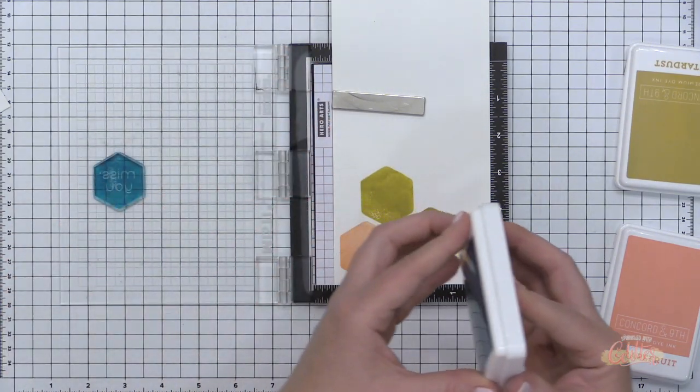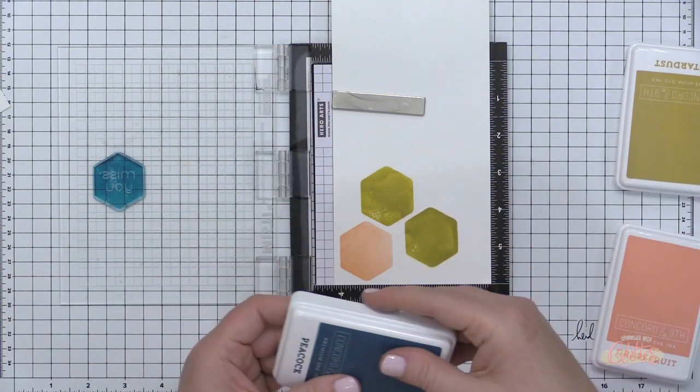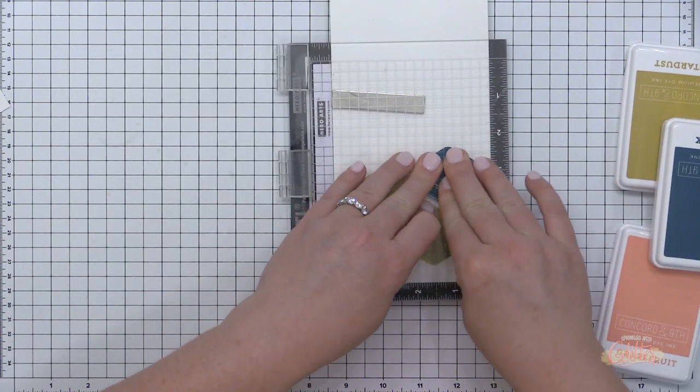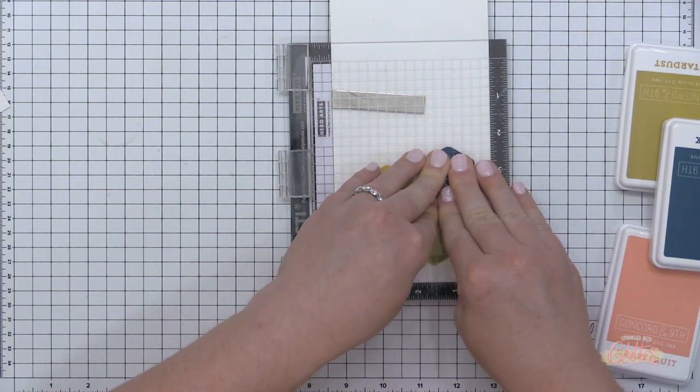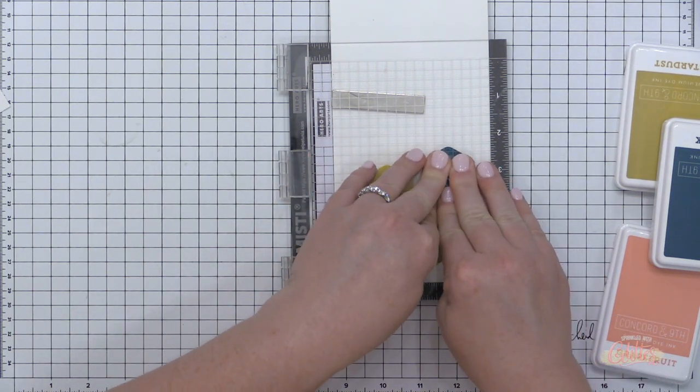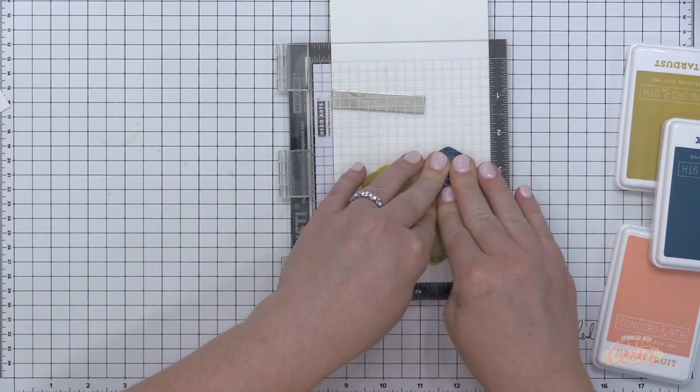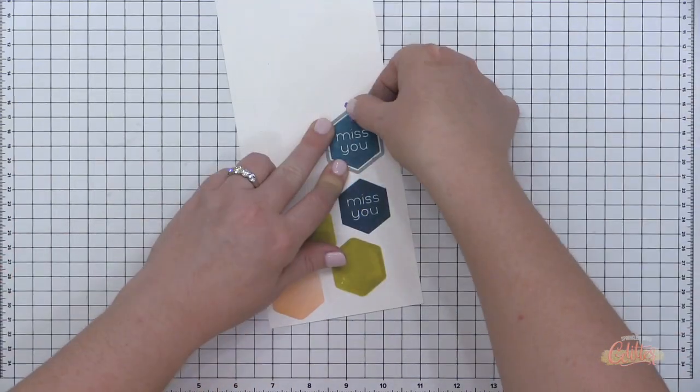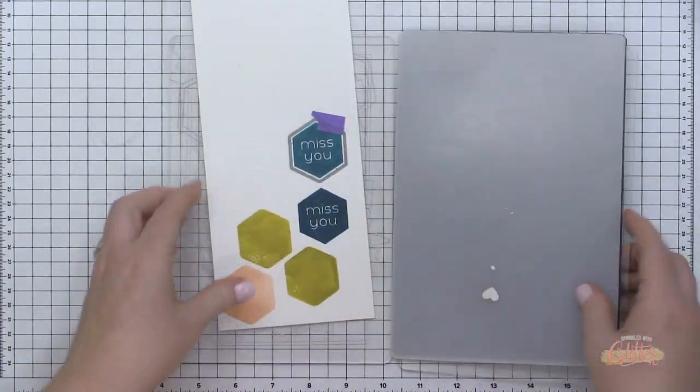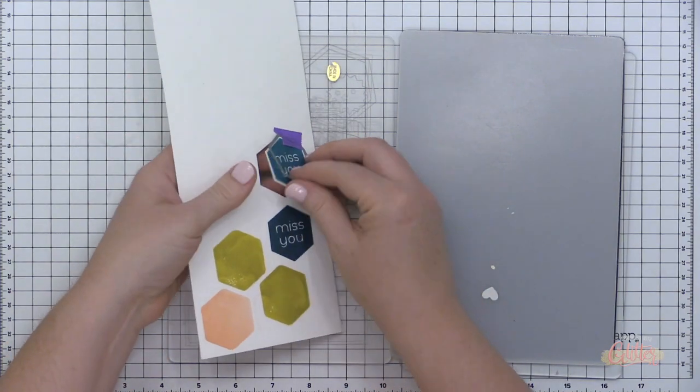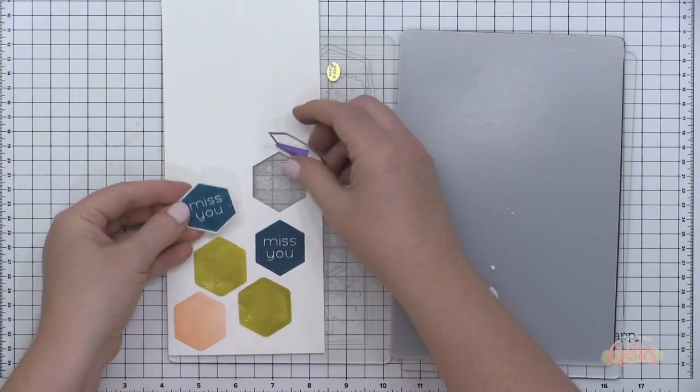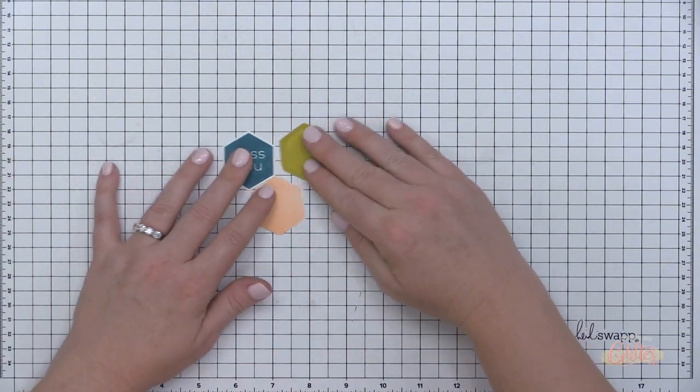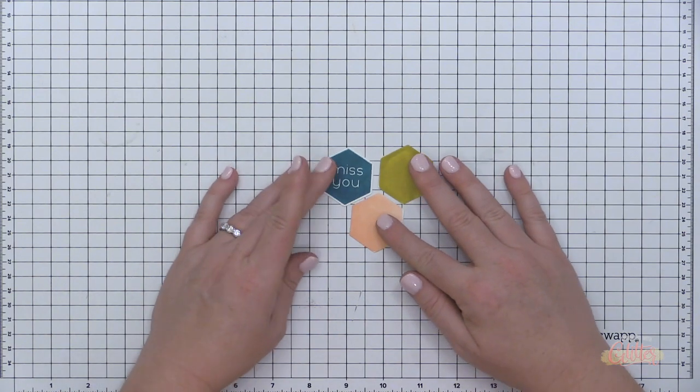For now I am using the Hey Bestie stamp set and I am stamping using the back side of this hexagon first, and then I flipped it over to where the sentiment would show, where that 'miss you' would show, and I stamped that onto my white cardstock as well. This is the Concord & Ninth white cardstock. By stamping with the back side of this hexagon, I have a solid hexagon rather than one with that 'miss you' sentiment. Once I have those all stamped, I used peacock, stardust, and grapefruit for these hexagons.